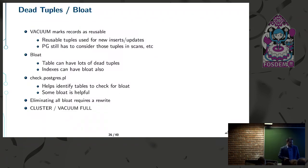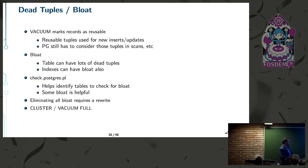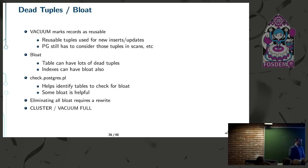Dead tuples and bloat: vacuum goes through and marks records as reusable — another reason autovacuum is helpful. But if there are dead tuples or empty space on a page, we still have to read that data during a sequential scan, causing performance impacts. Indexes can also have bloat. check_postgres and PGMonitor are helpful tools for identifying bloat. Note that eliminating all bloat requires a full rewrite, which is typically not a good idea — some empty space is actually useful because it means we don't have to extend the table when adding new tuples, and extending is expensive.